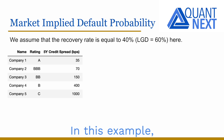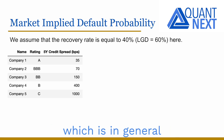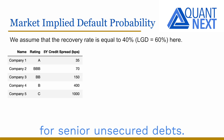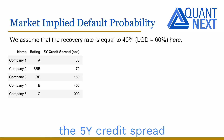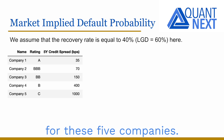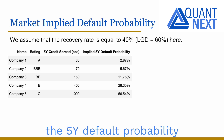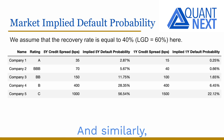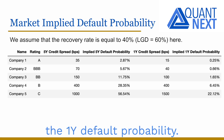In this example, we fix the recovery rate at 40%, which is generally the market convention for senior unsecured debts. We assume that we know the five-year credit spread for five companies, so we can estimate the five-year default probability using the previous formula. Similarly, if we know the value of the one-year credit spread, we can estimate the one-year default probability.